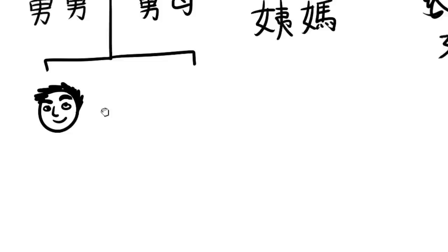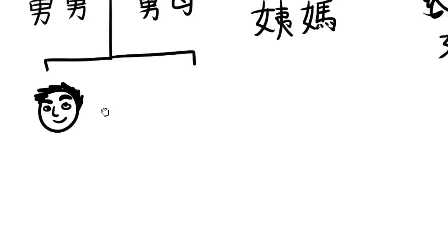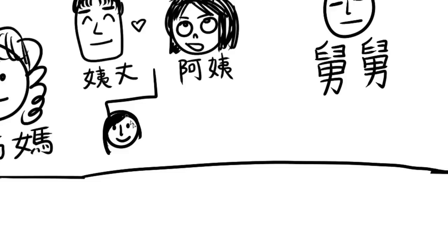Wait, they also have kids. So your cousins on your mom's side — your uncle's or auntie's son who is older than you is your 表哥, your uncle's or auntie's son who is younger than you is your 表弟, your uncle's or auntie's daughter who is older than you is your 表姐, and your uncle's or auntie's daughter who is younger than you is your 表妹.